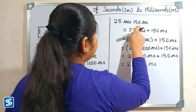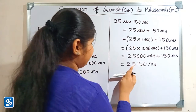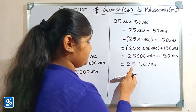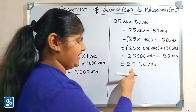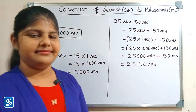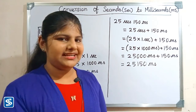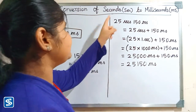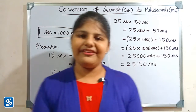So 25,000 plus 150 milliseconds will be 25,150 milliseconds. So 25 seconds 150 milliseconds is equal to 25,150 milliseconds. Hope you friends all understood how to convert seconds into milliseconds.